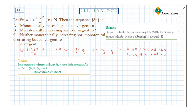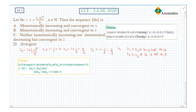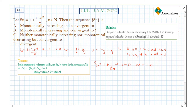So in this case, let us define the subsequences of even and odd numbers. The subsequence of even terms S2n is 1 plus 1/(2n), which converges to 1 + 0 as n goes to infinity. That is, S2n converges to 1.